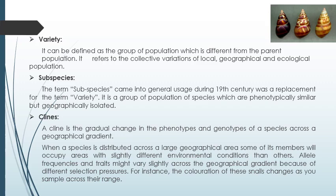Next is subspecies. The term subspecies came into general usage during the 19th century as a replacement for the term variety. Subspecies is a group of populations of a species which are phenotypically similar but geographically isolated. Their physical appearance can be similar, but the organisms are geographically isolated — they may have different locations and can produce new populations that are phenotypically related to each other.